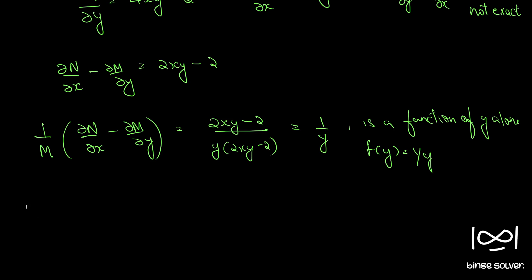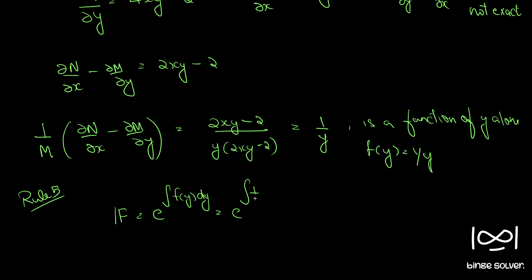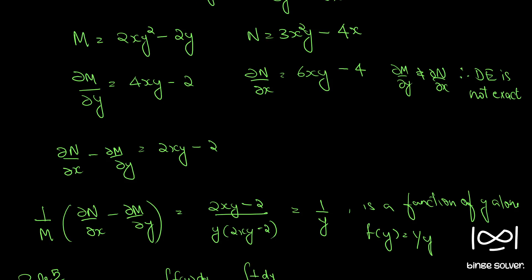Rule 5 says the integrating factor is e raised to the integral of f(y) dy. That is, e raised to the integral of 1/y dy, which equals e raised to log y, which equals y. So our integrating factor is y.